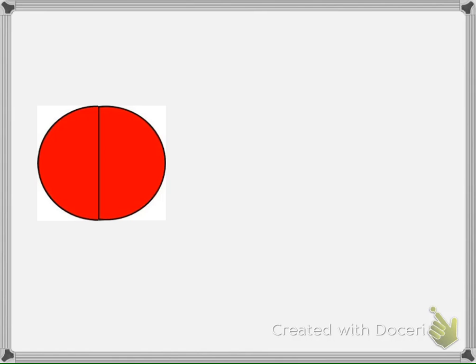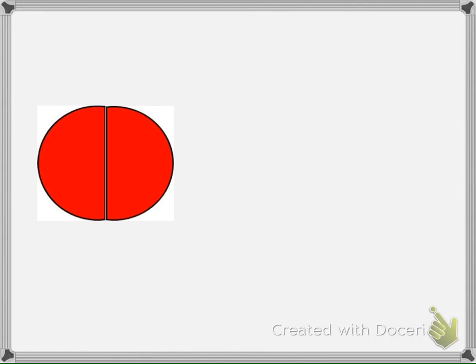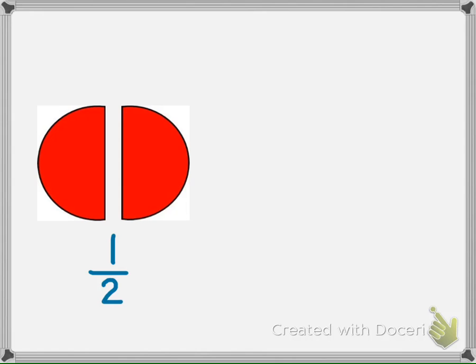It is easy to see fractions as a part of a whole thing when we look at a shape. The parts that a shape is divided into are described by the fraction. The circle is divided into two equal parts, so we say the circle is divided into halves. One part of this divided circle equals one half — one part out of two equal parts.